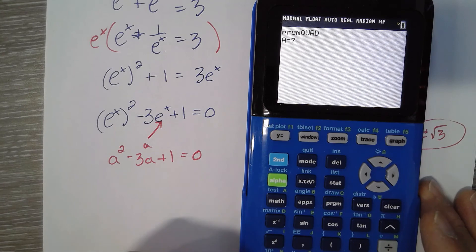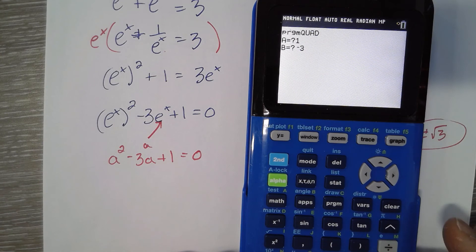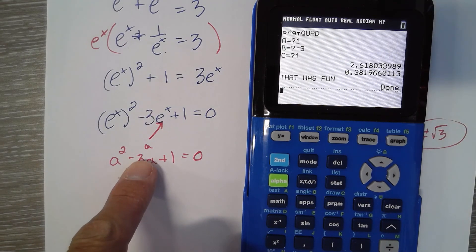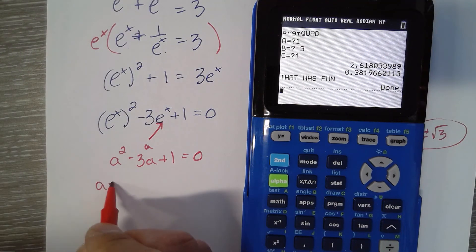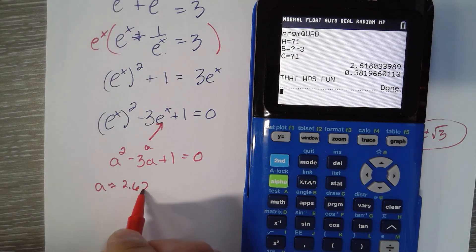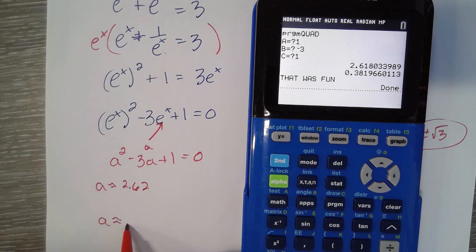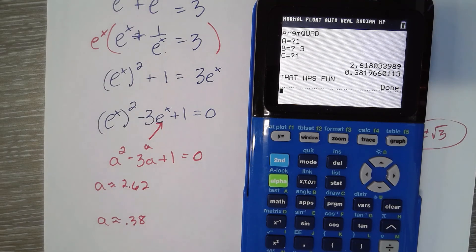Quadratic formula, A is 1, B is negative 3, and C is 1 for this problem. There's your coefficients, and we get our two answers for A is 2.62, and A is 0.38. Okay. That's what A is.